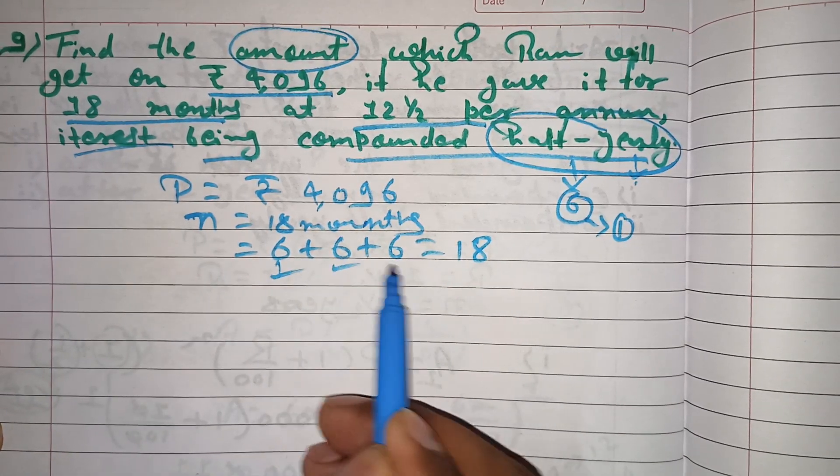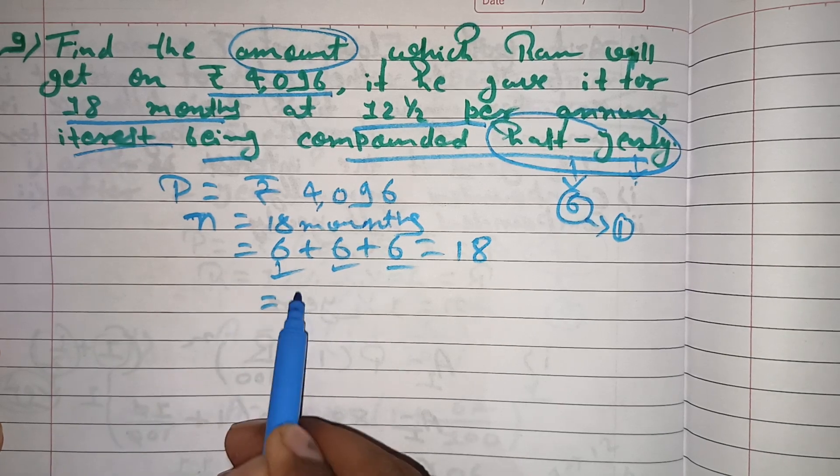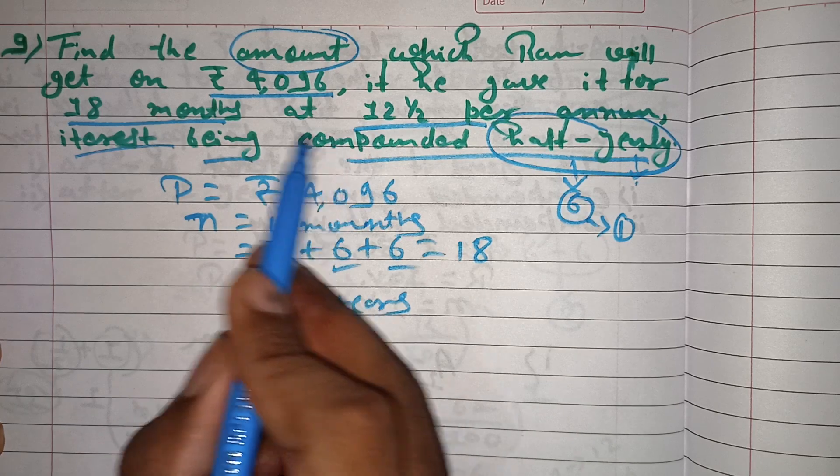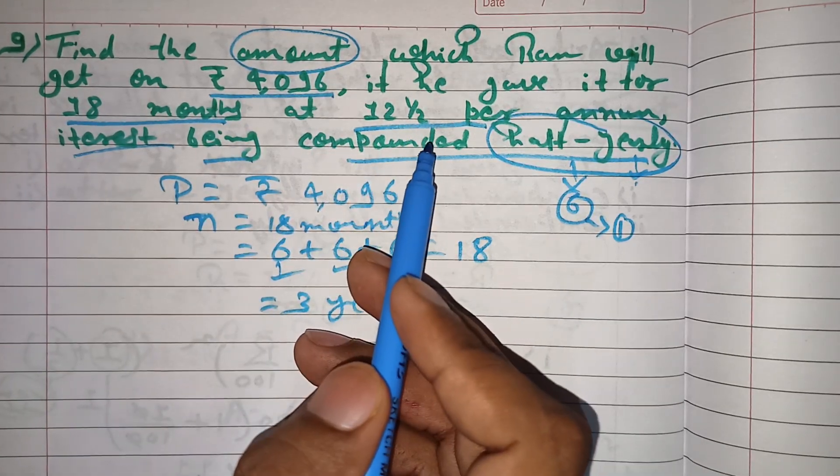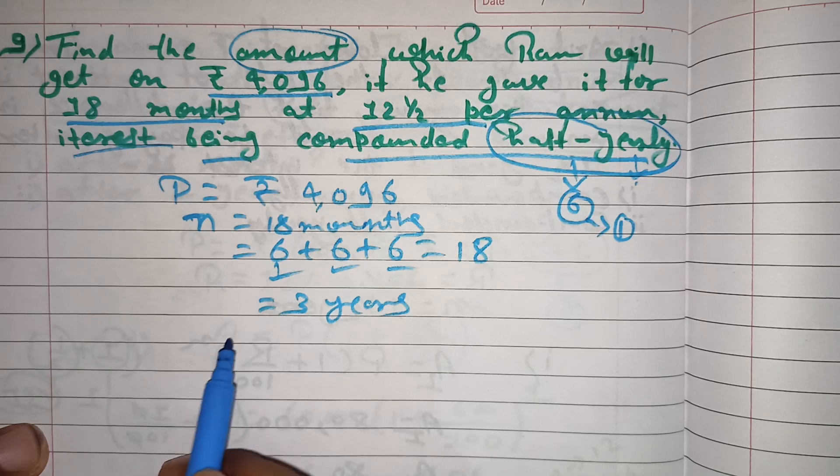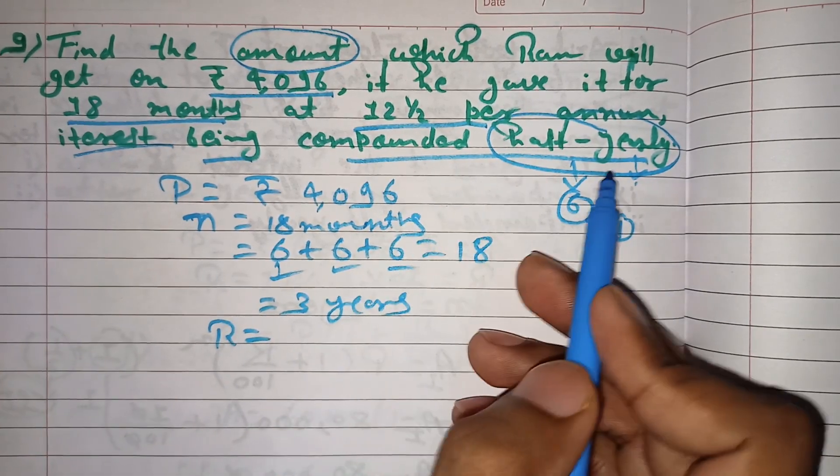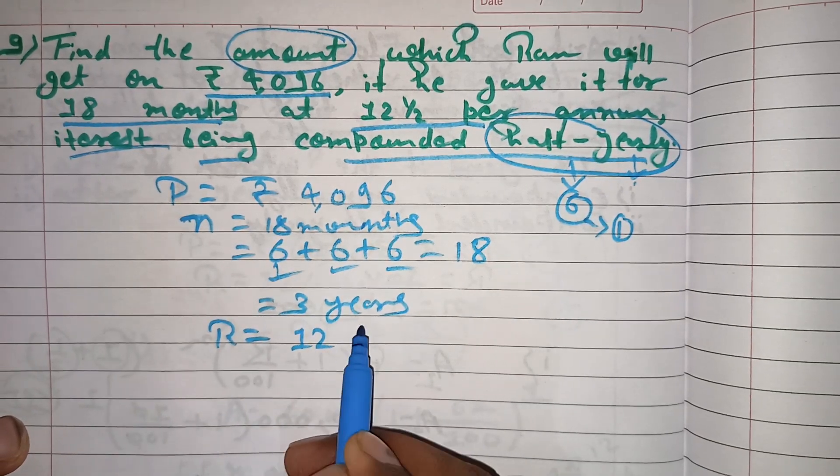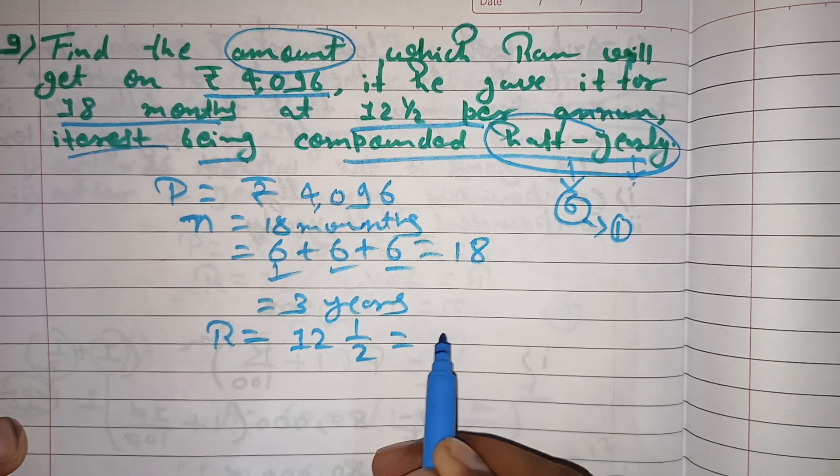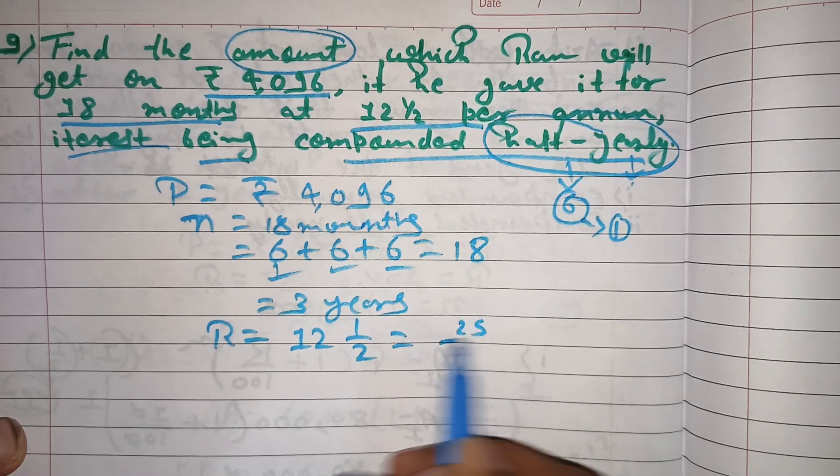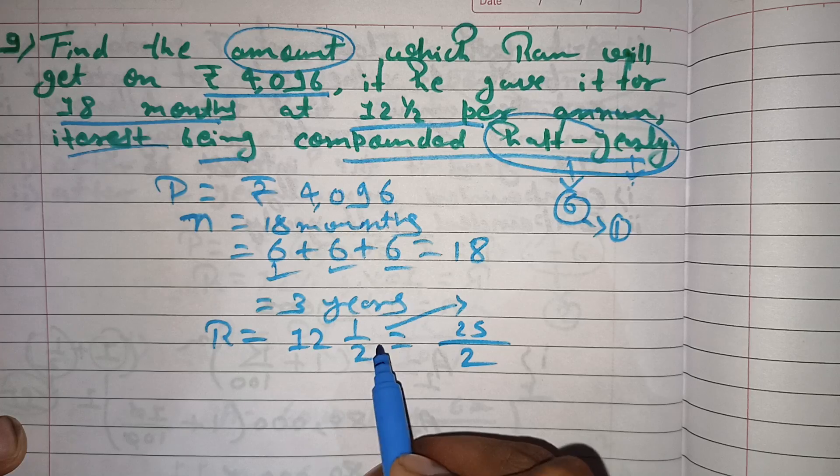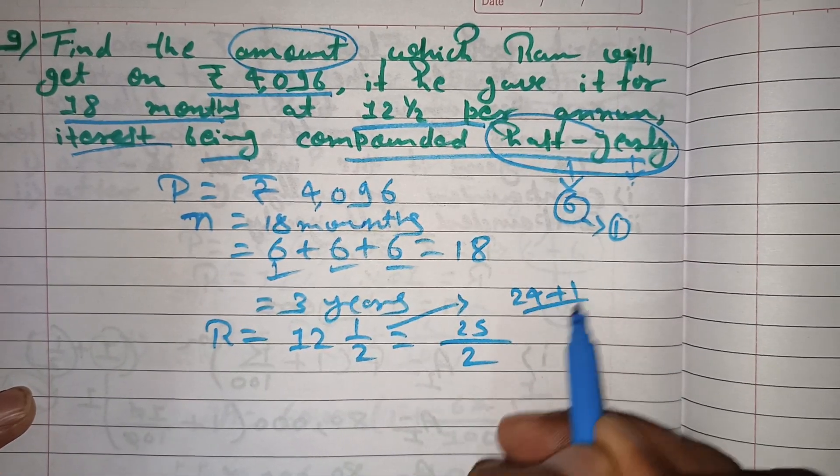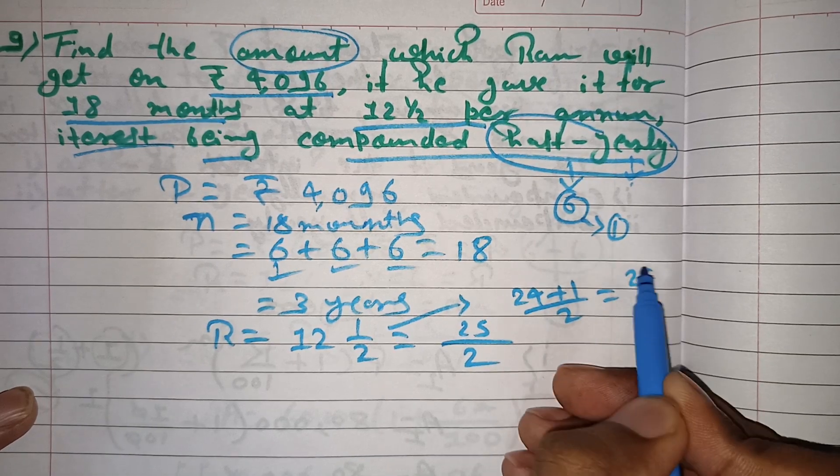Interest rate is 12 and half percent. Since the compound is half yearly, we take half of this rate. 12 and half equals 25 by 2, so the rate is 25 by 2 percent per half year.